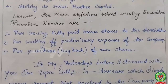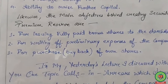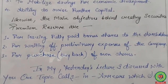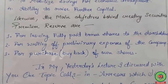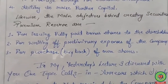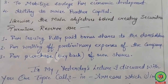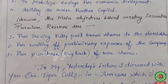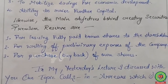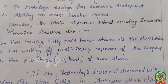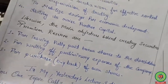The main objectives behind creating the security premium reserve: first, for issuing fully paid bonus shares to shareholders; second, for writing off the preliminary expenses of the company; and third, for the purchase or buyback of own shares. These three are the main objectives for the security premium reserve.